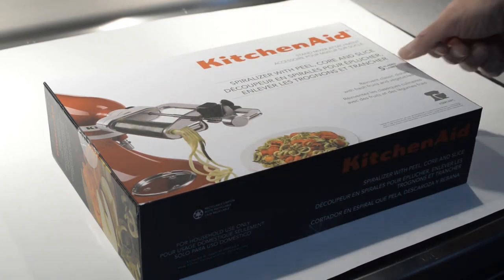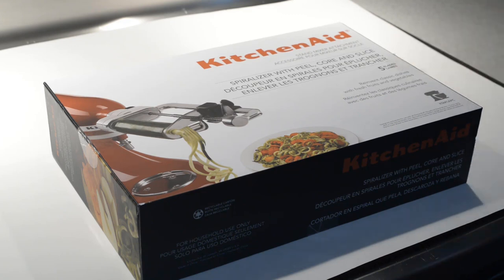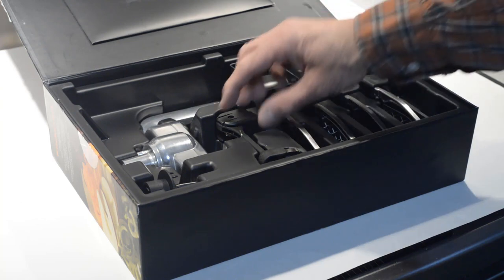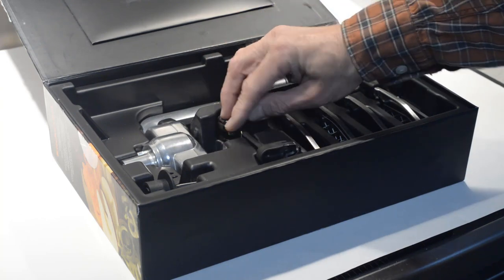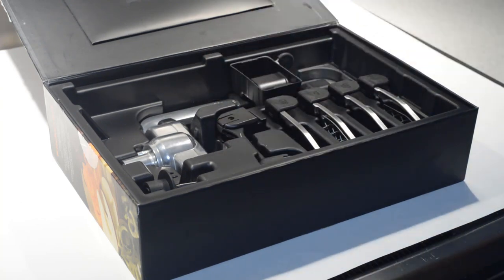This particular attachment comes with five blades. This piece is the peeler, which they consider one of their blades. I won't be using it because I don't peel the zucchini.